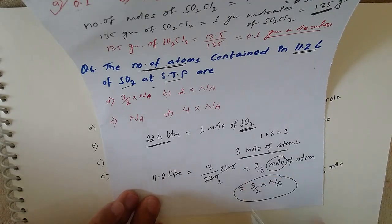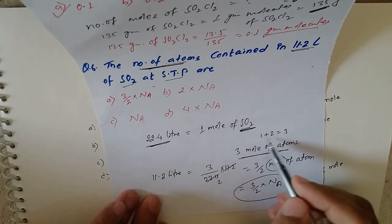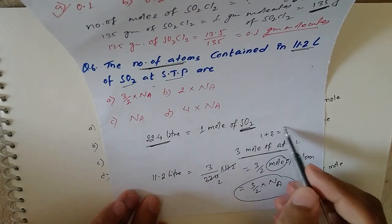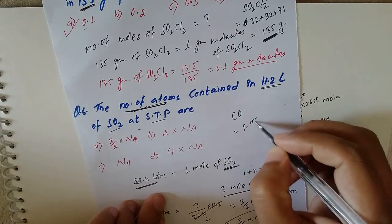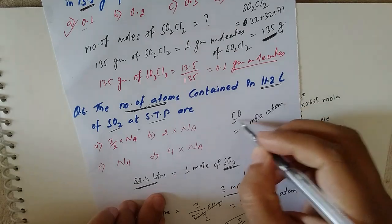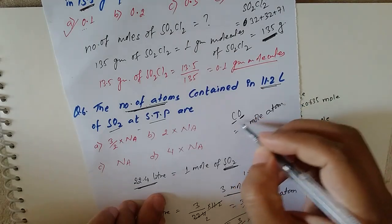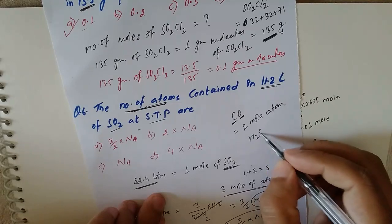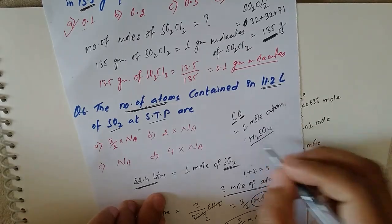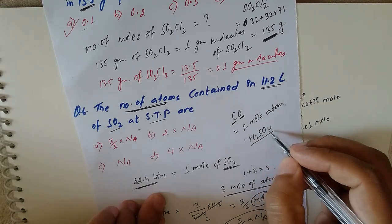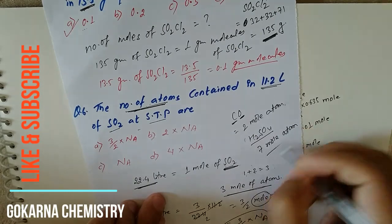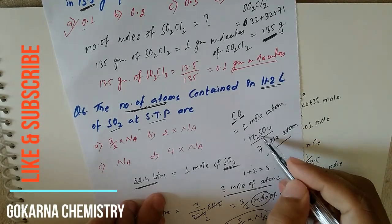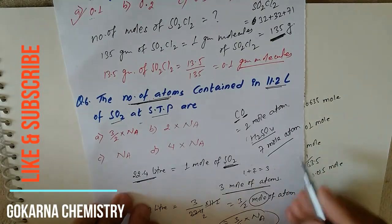To summarize: for SO2, 1 mole gives 1 + 2 = 3 moles of atoms. Similarly, for CO there are 2 moles of atoms. For H2SO4, the total atoms are 2 hydrogen + 1 sulfur + 4 oxygen = 7 moles of atoms per mole of molecule.